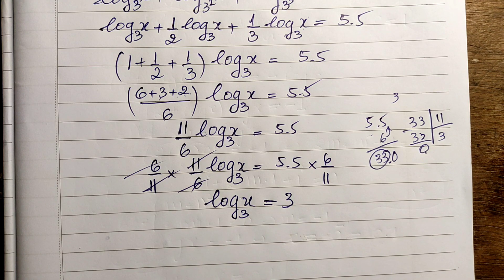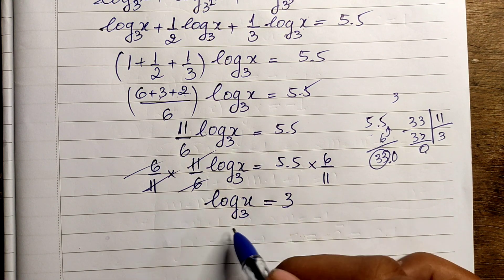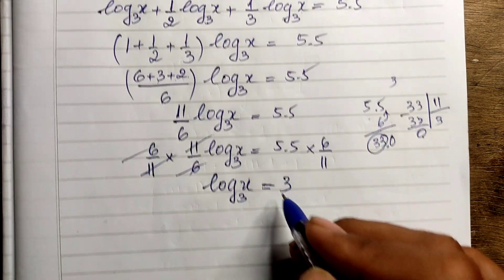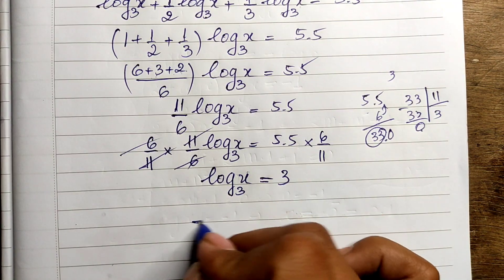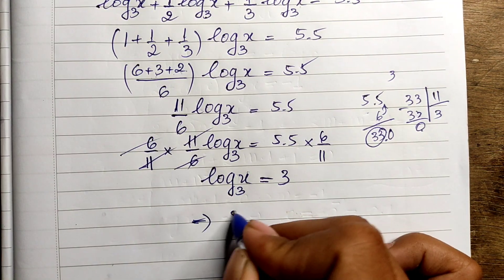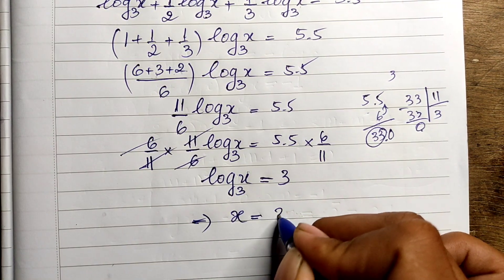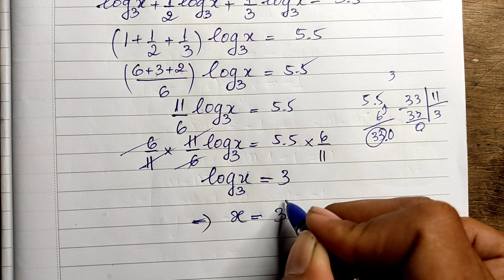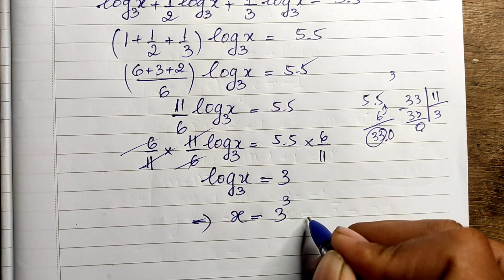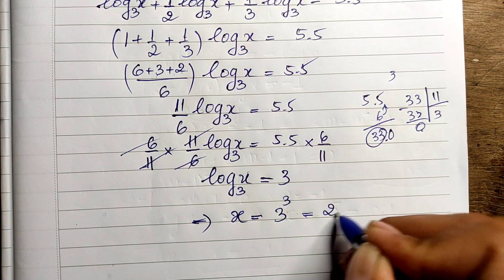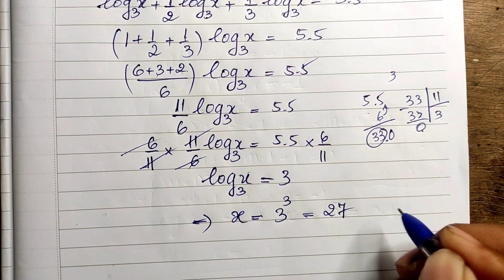Our equation is now log base 3 of x equals 3, so x equals 3 to the power 3, which equals 27.